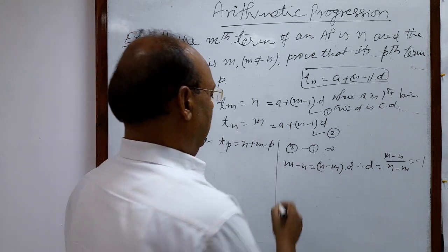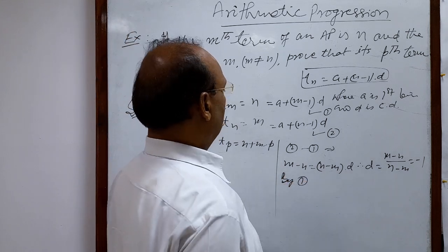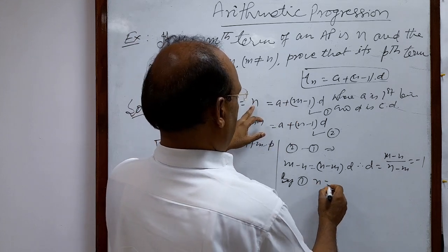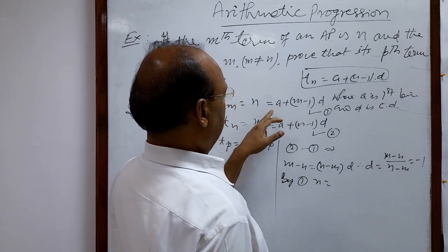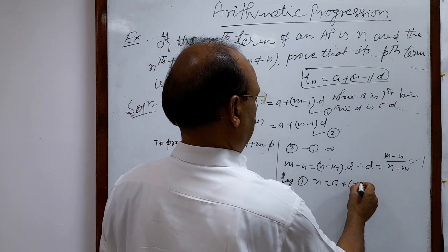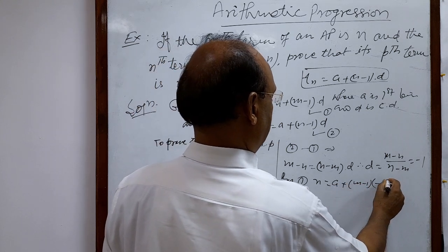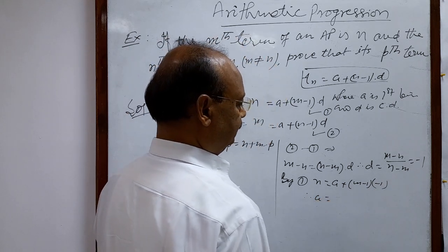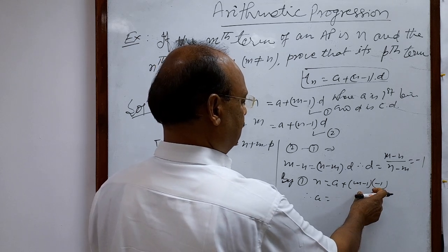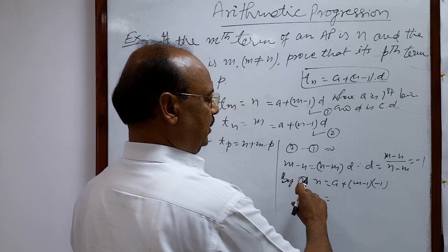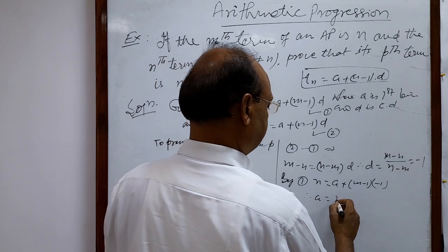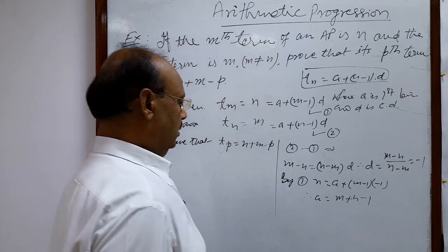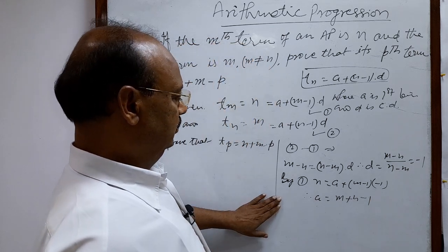By equation 1, if we put the value of d here, we will get the value of a. So n equals a plus (m minus 1) times (minus 1). Therefore, transposing this term, a equals m plus n minus 1. This is the value of a.